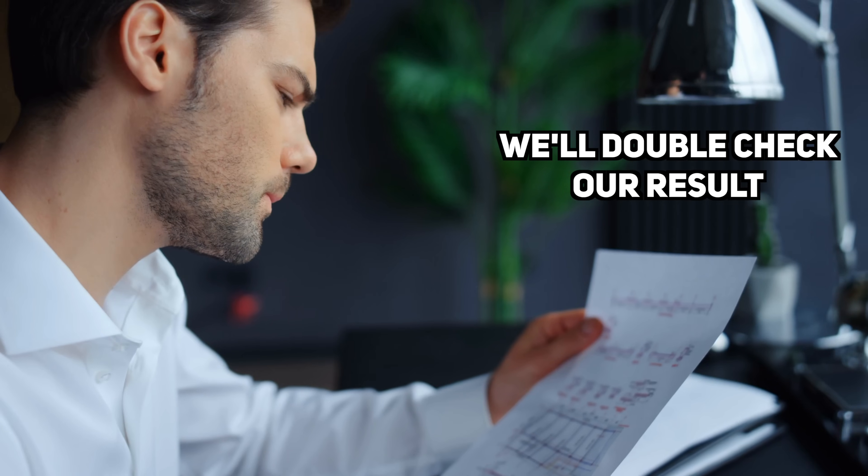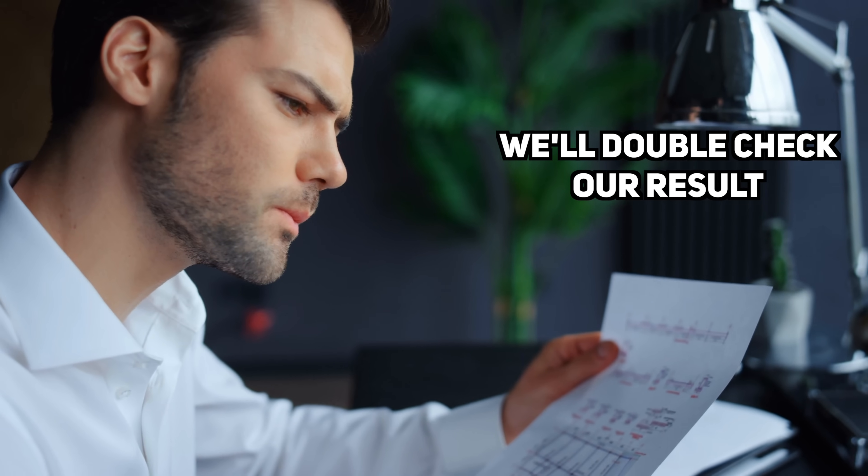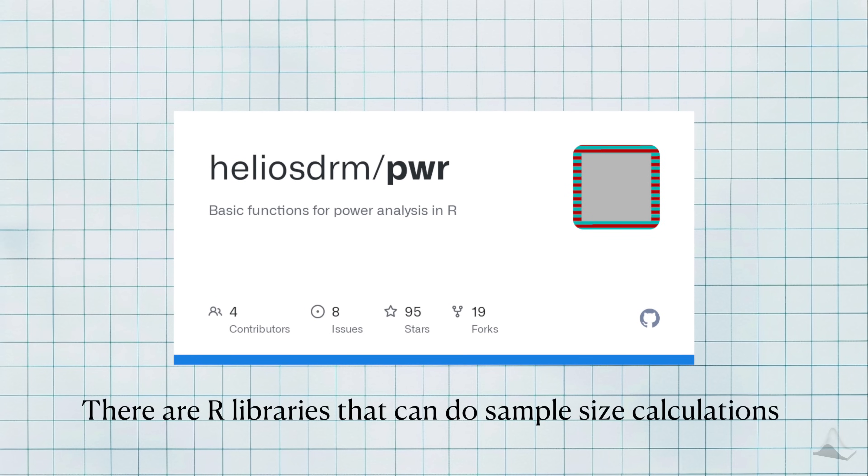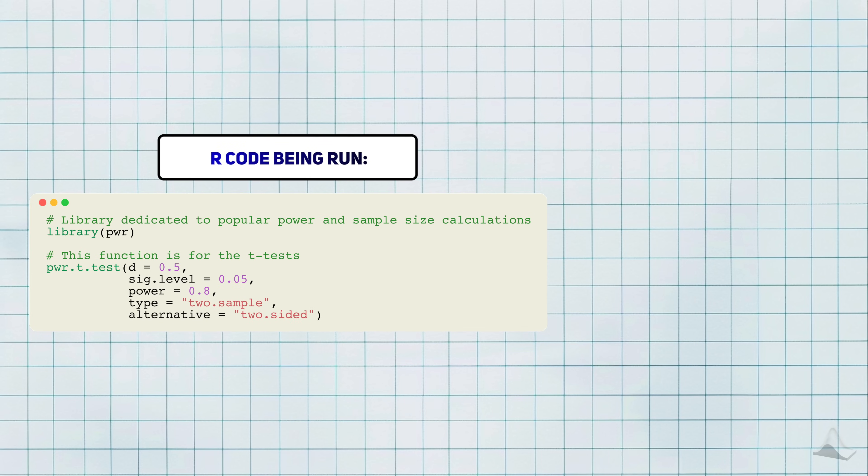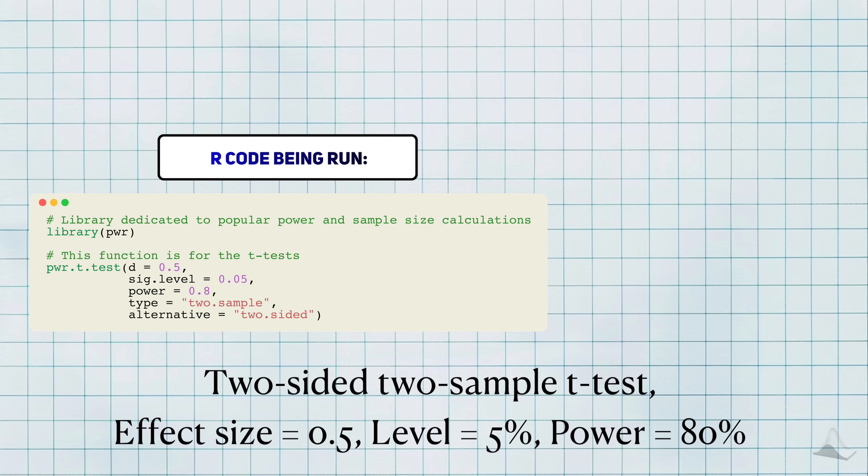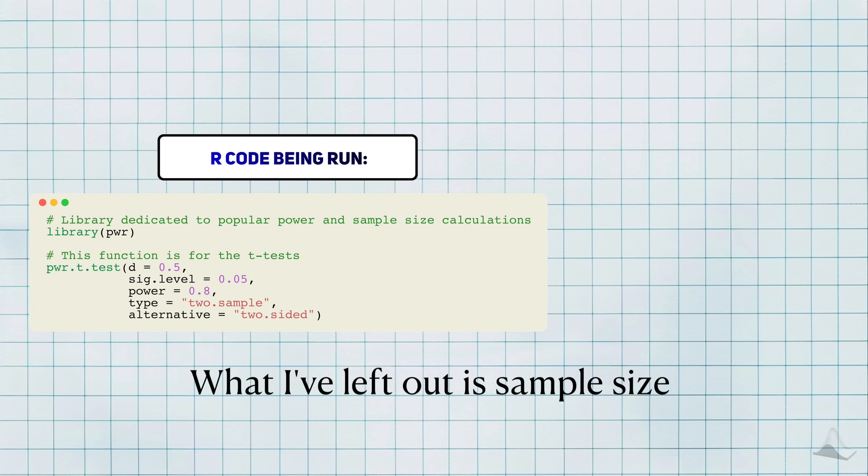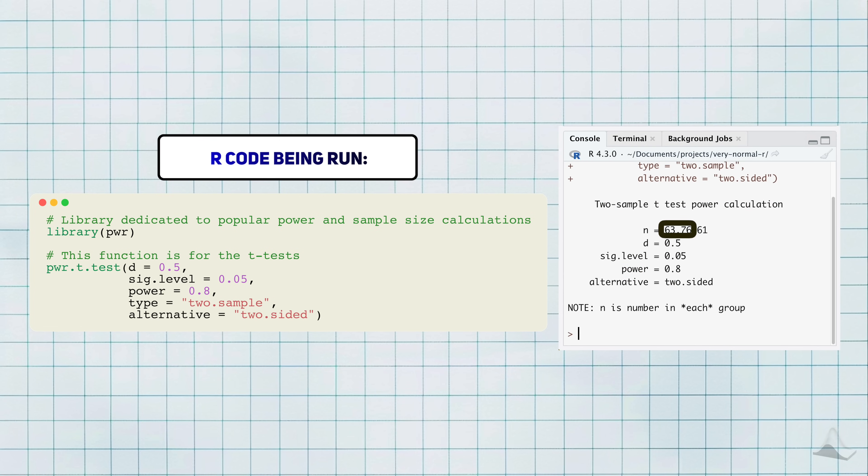But wait, there's more! So I'll take one last step and double check this result. There are libraries out there that have functions that contain common sample size calculations. One such R library is the power library. To calculate sample size with this function, I need to plug in the characteristics of our simulation study. I use the 5% level for a two-sided test and I know I want 80% power. What I've left out is the argument for sample size, and the function is written to calculate this for me if I leave it out. What I get is 63.7. Since I can't cut people up into parts, I'll round it up to a clean 64. And this is exactly what we got from the Monte Carlo approach.